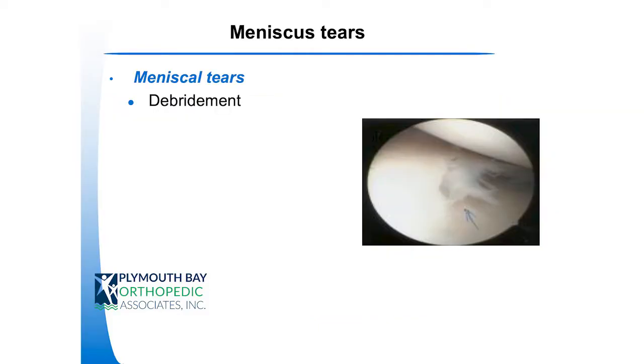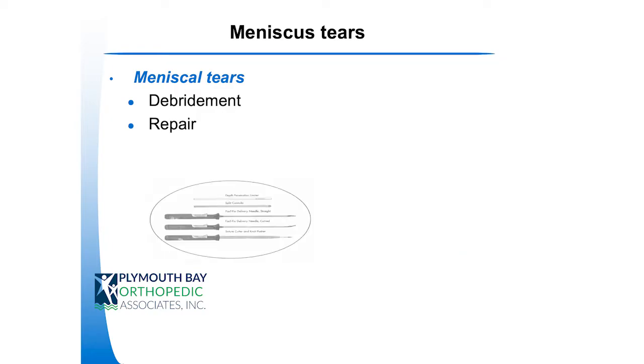When it does become a surgical issue, they're debrided — primarily the degenerative-type tears, flap tears, or tears in the avascular zone typically get debrided as well. Repairs are reserved for a certain type of meniscus tear usually in the younger patient — typically high school, college age, and young adults. It has to be deep into the periphery where there's still a blood supply, the so-called red zone or the border of the red-white zone. Where the white tissue is, there's not a good blood supply and it's typically not repairable.